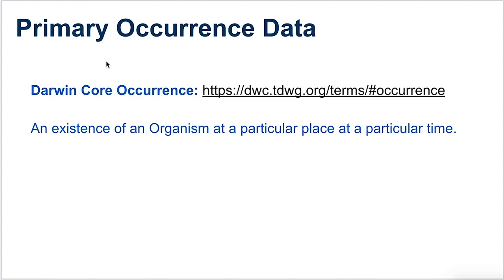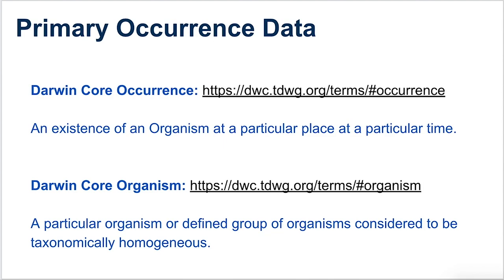Taking advantage of Darwin Core and their definition of occurrence: an occurrence is an existence of an organism — where 'organism' is capitalized on purpose because it's a Darwin Core Organism — at a particular place at a particular time. A Darwin Core Organism is a particular organism, the word we use in normal parlance, or a defined group considered to be taxonomically homogeneous. It's a bit vague, but hopefully it lets us understand we're talking about things like individuals of a species.